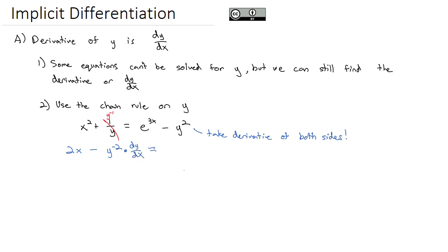That's going to equal the derivative of e to the 3x, using the chain rule there, minus the derivative of y squared is 2y. But then we have to take the derivative of y, which is dy/dx.